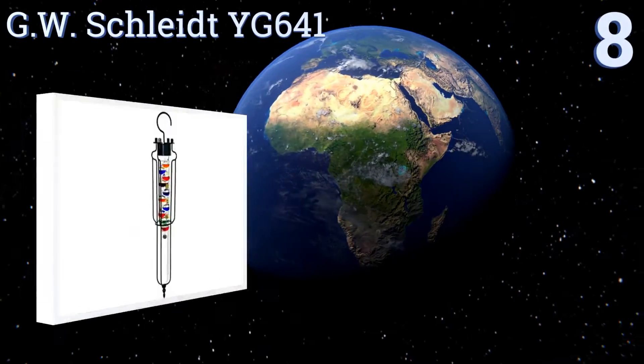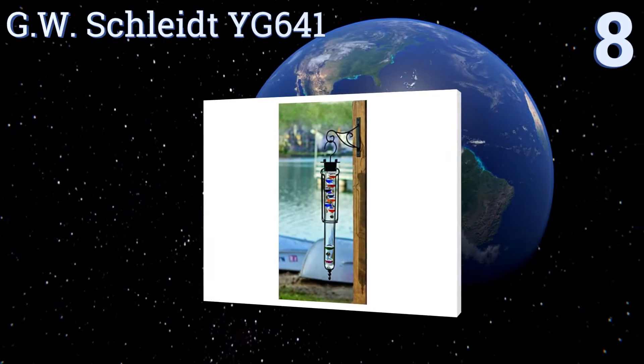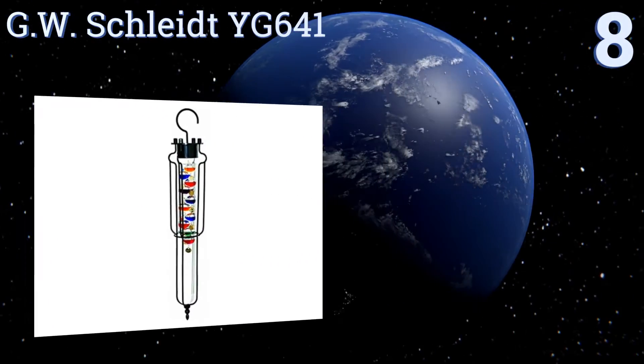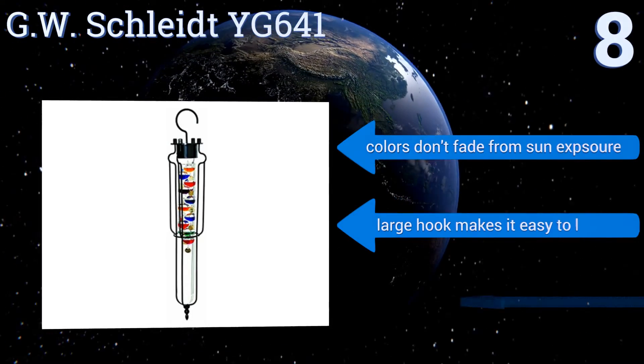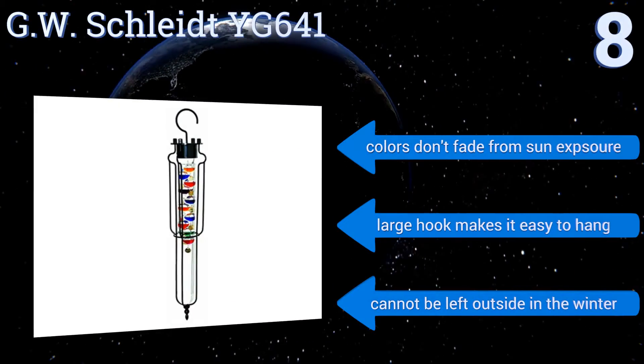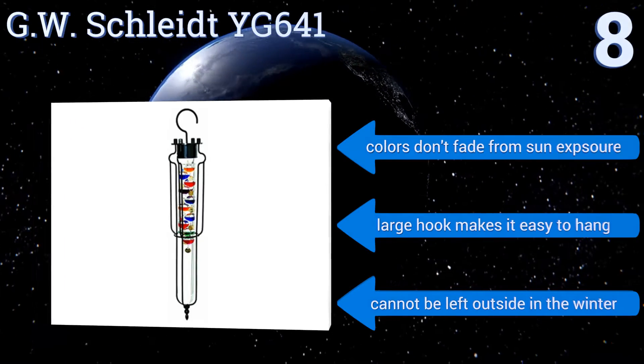Starting off our list at number 8. Whether hung outside on a patio, near a window or mounted to an interior wall, the elegant GW Schleidt YG641 brings a bit of beauty to any home. It comes with a decorative hanging bracket that matches the thermometer's delicate grace. The colors don't fade from sun exposure, and a large hook makes it easy to hang. However, it can't be left outside in the winter.